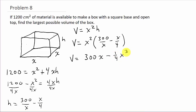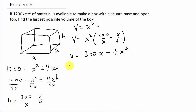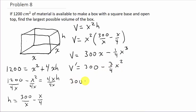I want to take the derivative to find the critical number. V′ = 300 − (3/4)x². Setting this equal to zero: 300 − (3/4)x² = 0.